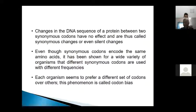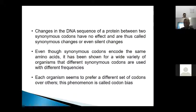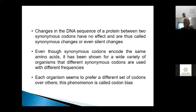Different species are using different codons for the same amino acids, and also with different frequencies. In one organism they mostly use one codon for an amino acid; in another species they use another codon. This difference is called codon bias, and it occurs in nature most frequently.